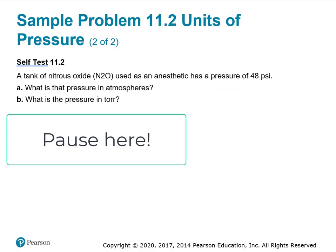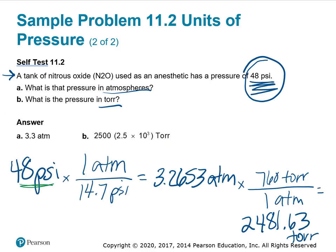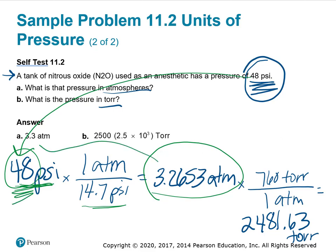You're going to need to look back at your notes for this next one. A tank of nitrous oxide (N2O) used as an anesthetic has a pressure of 48 PSI. What is that pressure in atmospheres and in torr? 48 PSI is our starting point, and there is 14.7 PSI in one atmosphere. My calculator gave 3.2653. I want two significant figures, so that rounds to 3.3 atmospheres.